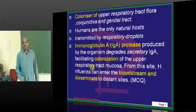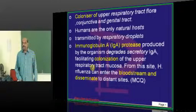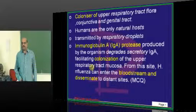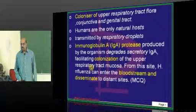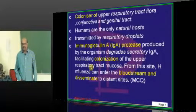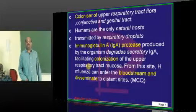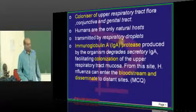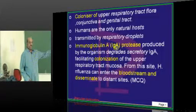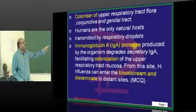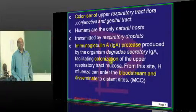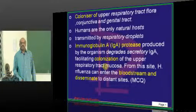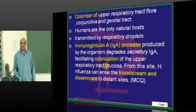Remember IgA protease. Which organisms produce IgA protease? Streptococcus is one. Immunoglobulin A protease is produced by H. influenzae. Can you explain why it is a colonizer? The only immunity in our respiratory and gastrointestinal tract to fight infection is Immunoglobulin A.